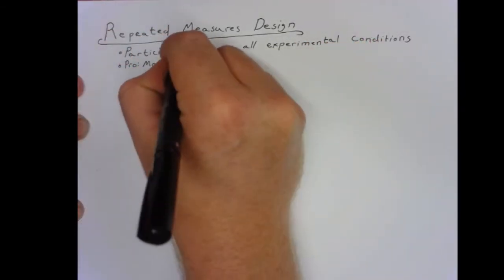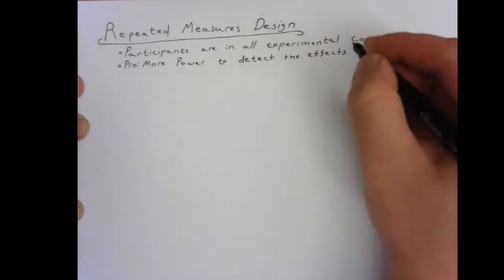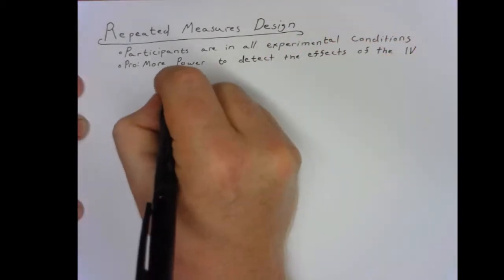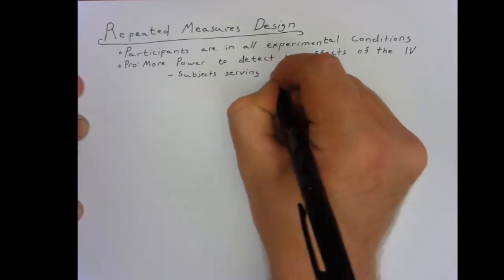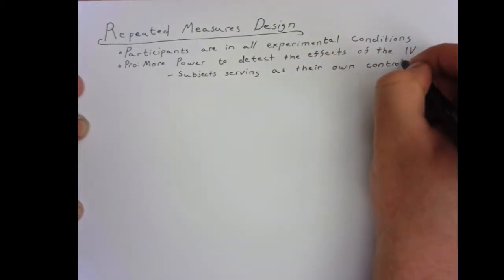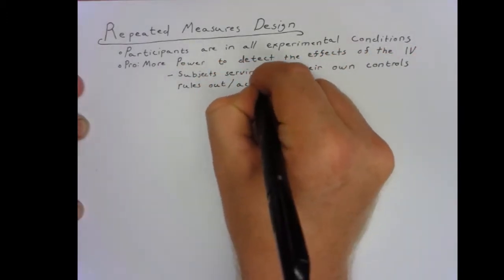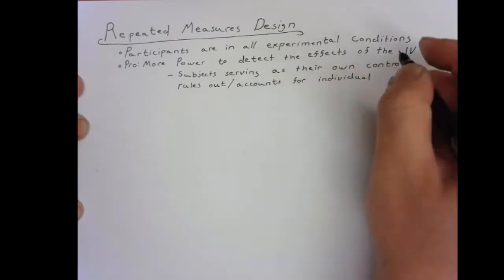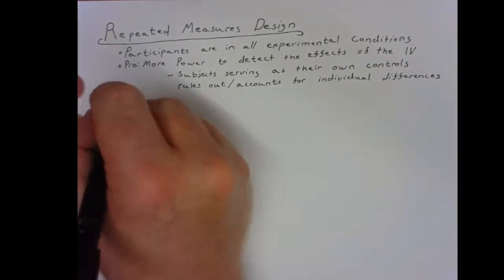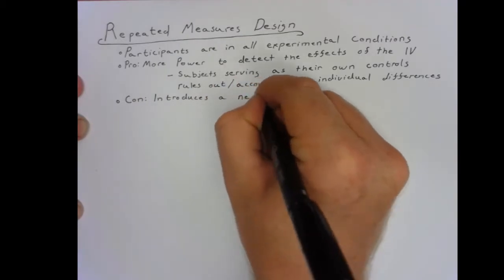The major advantage this creates is that you have more power to detect anything the independent variable is doing. This is because all of the different subjects are acting as their own controls, so you don't need to worry about individual differences in sampling error to the same degree.